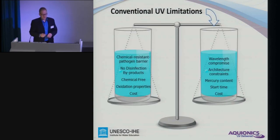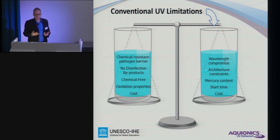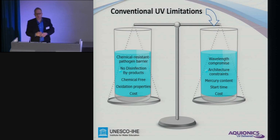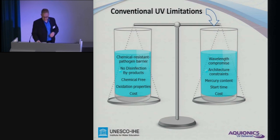On the flip side, we do have a wavelength compromise, which I will explain. We have some architecture constraints because all the lamps tend to be cylindrical and rather long, so we basically design the unit around the consumable of the product, which is really a little bit weird of a concept. Another flip side is the mercury that is in the lamps. The start time in terms of warm-up and also cooling down means you cannot just switch on and off without compromising the lamp life. And compared to other options, it could be quite costly depending on the availability of the consumables.